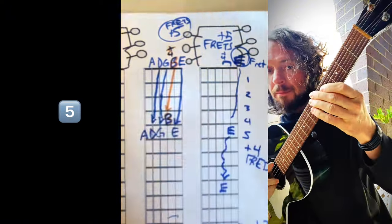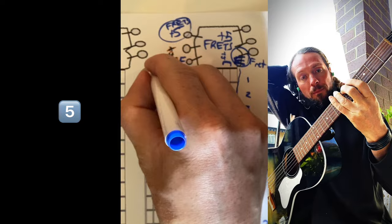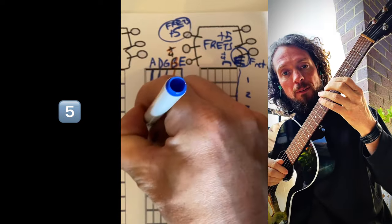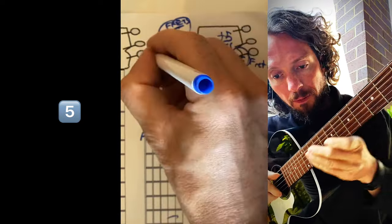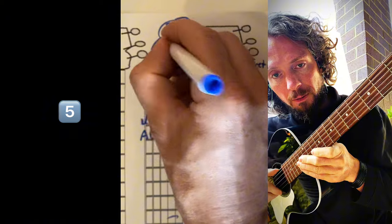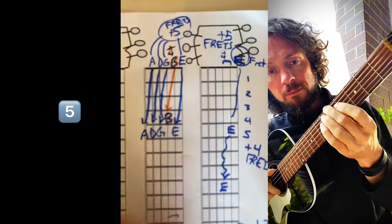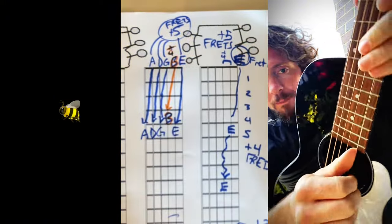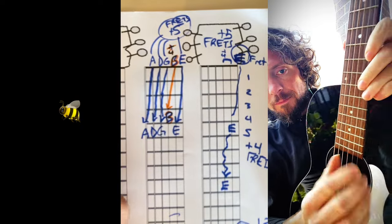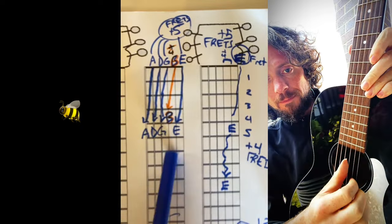This string is open, a plus five. So if you'll notice, these are all plus fives. The only one that's not a plus five is the B note. This demystifies a lot of people because the guitar can be like learning six pianos.